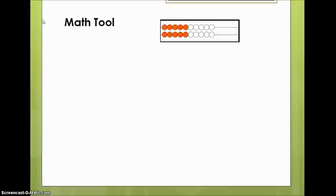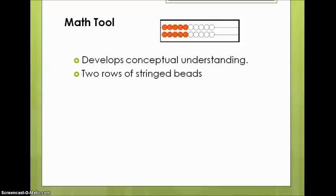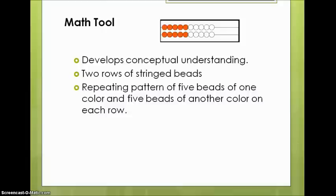The Rekenrek is a math tool that helps develop conceptual understanding in young children. It's actually made up of two rows of stringed beads. As you can see in the picture, there's a repeating pattern of five beads of one color and five beads of another color on each row.